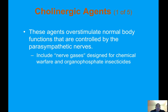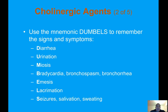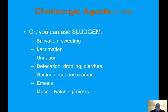Cholinergic agents over-stimulate normal body functions controlled by the parasympathetic nerves. These include nerve gases designed for chemical warfare and organophosphate insecticides. Use the mnemonic DUMBBELLS to remember the signs and symptoms: Diarrhea, Urination, Miosis (pupillary constriction), Bradycardia, Bronchospasm, Bronchorrhea, Emesis, Lacrimation, Seizures, Salivation, Sweating. Alternatively, use SLUDGE: Salivation, Sweating, Lacrimation, Urination, Defecation, Drooling/Diarrhea, Gastric upset and cramps, Emesis, and Muscle twitching.